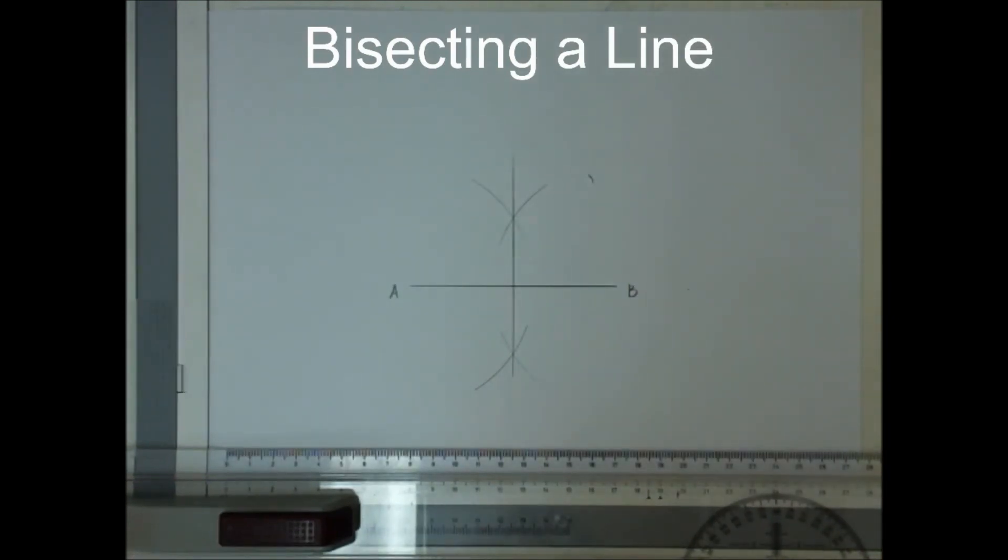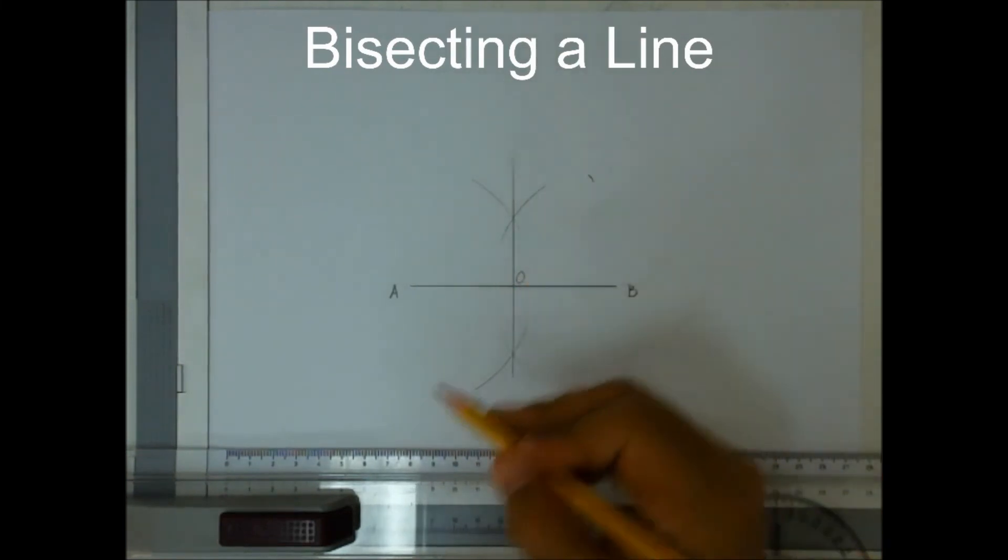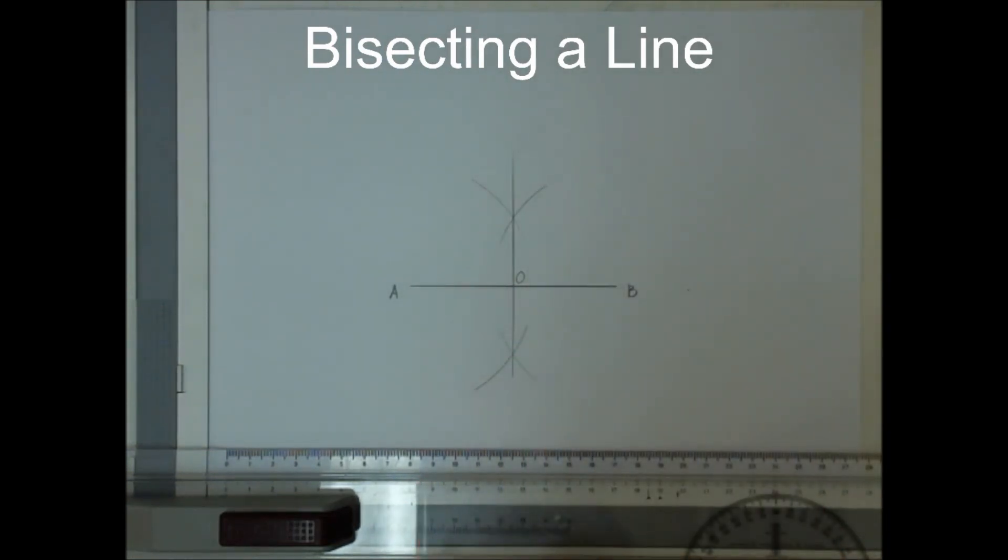And there you go. This new intersection here, let's call it point O. This new intersection point O will be the midpoint of line AB.